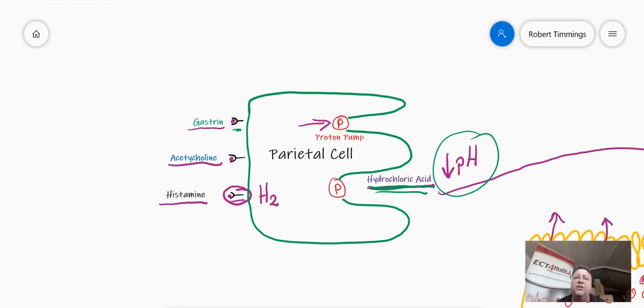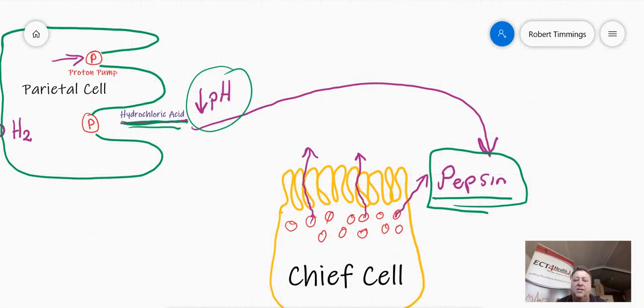But I also secrete acid for the second reason, and that is to switch on this substance that the chief cells make. And the chief cells manufacture this chemical, which is called pepsinogen. Let's just quickly recap. Pepsinogen is secreted by the chief cells on the inside of your stomach. They're constantly being secreted under the influence of a number of things, just to maintain an environment of pepsinogen in readiness for when protein should come into your body.